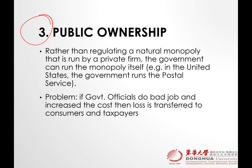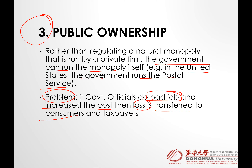Number three is public ownership — what if the government turns some private monopolies into government bodies? Rather than regulating the natural monopoly run by private firms, the government can run the monopoly itself. For example, the United States government runs the postal services. But what are the problems? If government officials do a bad job — which is normally the case in every country — the government processes are very slow and they increase the cost, with the loss fulfilled through taxpayer money.